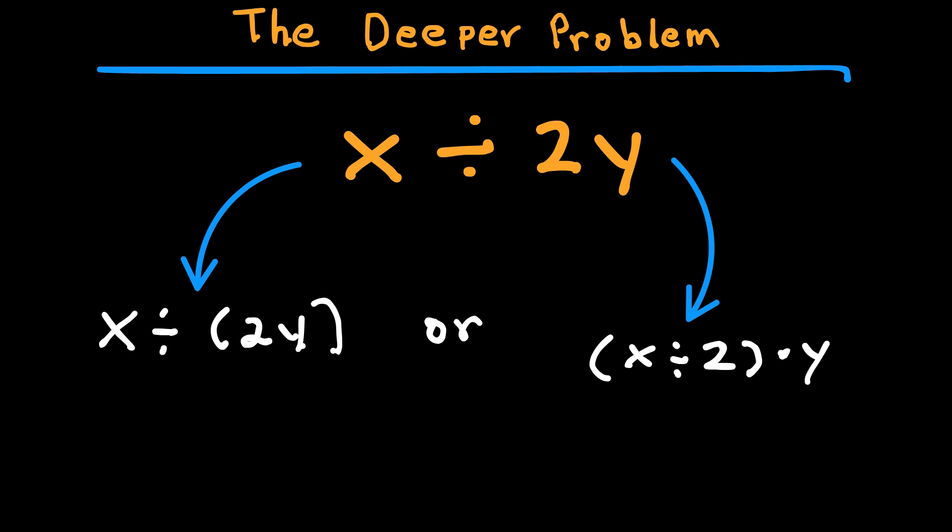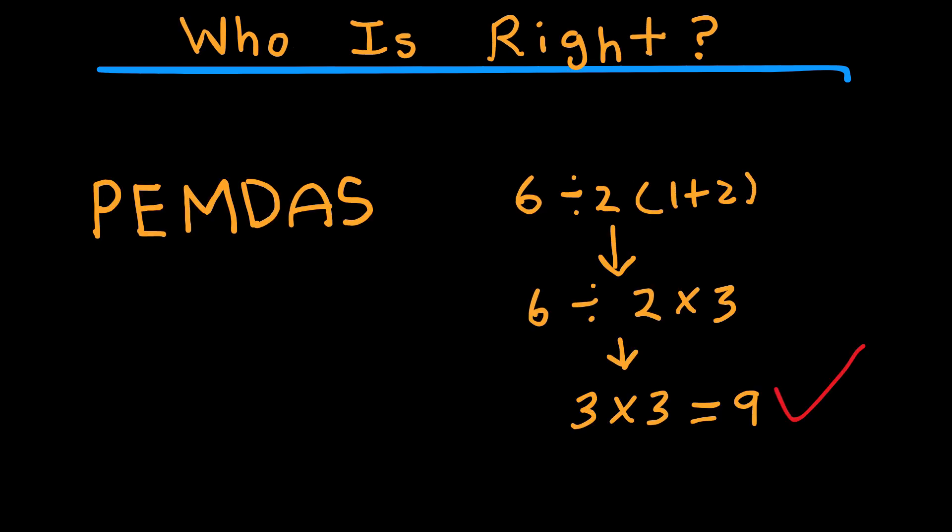This is why professional mathematicians push for clear notation. Use parenthesis. Be explicit. If you go strictly by PEMDAS, following the rule of left to right, then 6 divided 2, parenthesis 1 plus 2 parenthesis, solving it by applying the rules of PEMDAS, you will end up with 9 as your final answer. That's what most calculators and programming languages say. So technically, 9 is correct.